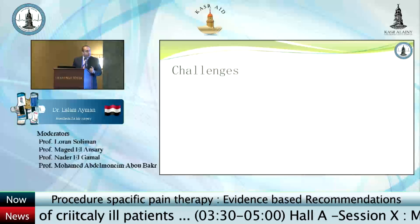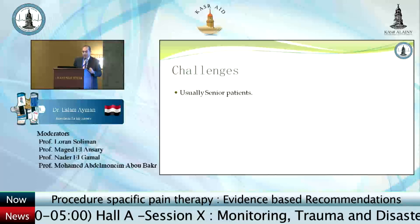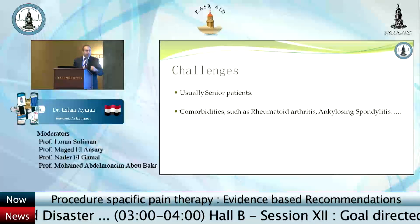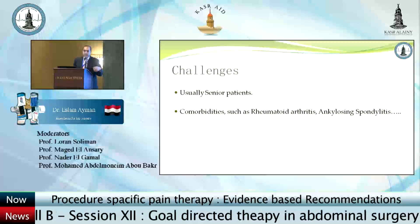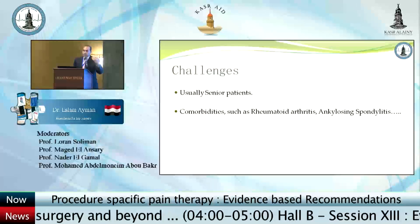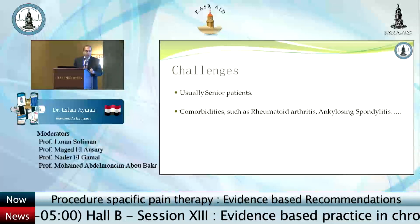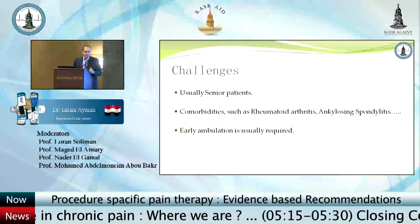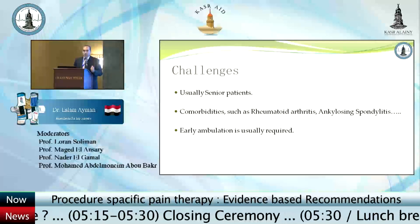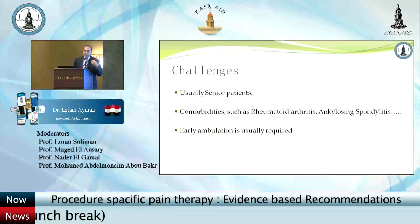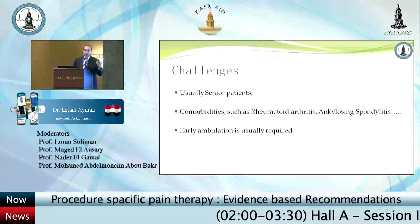What are the challenges when we anesthetize a patient for hip replacement? These are usually senior patients with many comorbidities. There may be additional conditions predisposing to the problem itself, such as rheumatoid arthritis or ankylosing spondylitis, which pose challenges for both regional and general anesthesia. In most cases of hip replacement, we need early mobilization for the sake of the surgery and to minimize post-operative complications. We need to maintain some motor power while also providing very good analgesia to allow early mobilization.